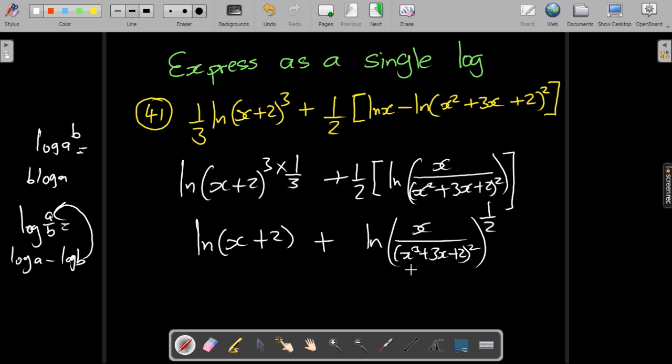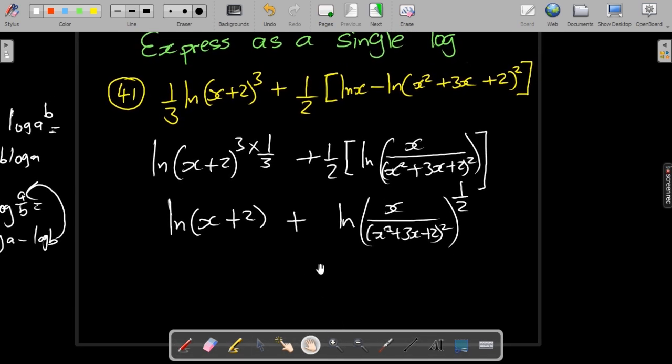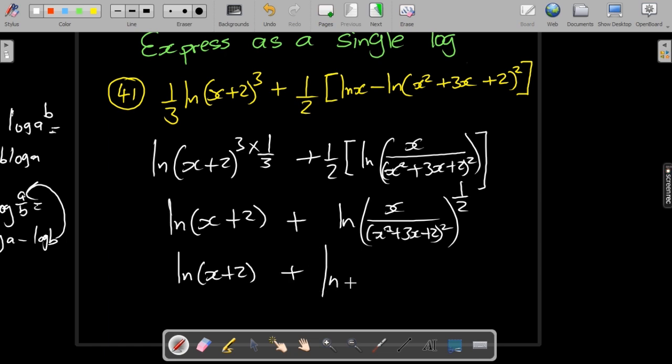This is what we're going to have. Having that power of a half is equivalent to having the square root, so you can find the square root of the top and the bottom.